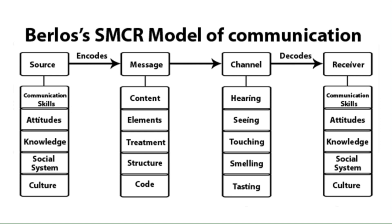The sender of the message, from where the message originates, is referred to as the encoder — the source encodes the message. Under the element of message, we have content. The body of a message from the beginning to the end comprises its content. For example, whatever the class teacher teaches from beginning to end is the content of the message. Elements include various things like language, gestures, body language, and many more — they constitute all the elements of a particular message. Any content is accompanied by some elements.